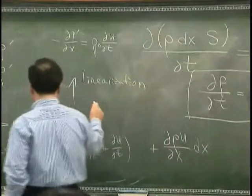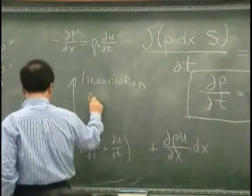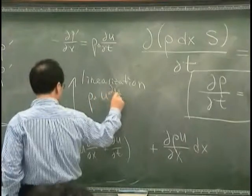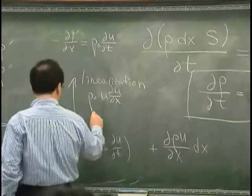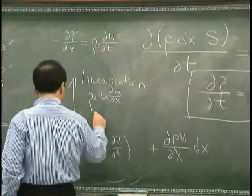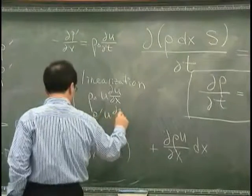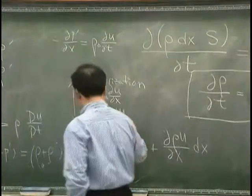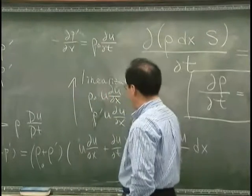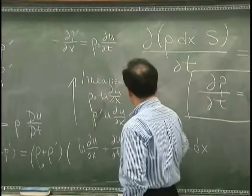In other words, I neglected rho zero U du/dx, and rho prime u du/dx, and rho prime du/dt.